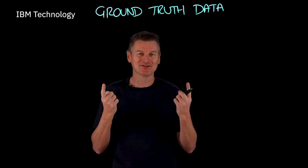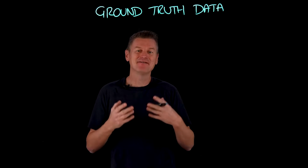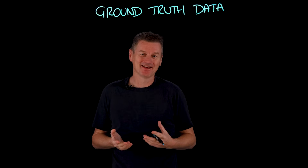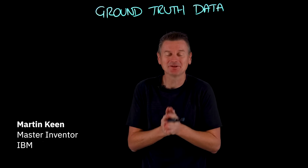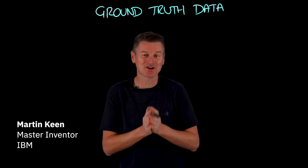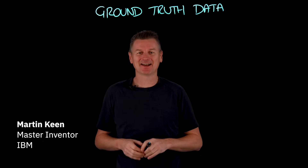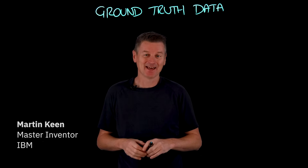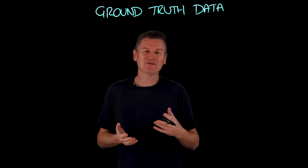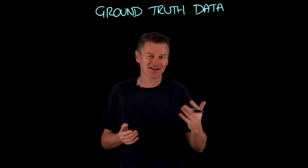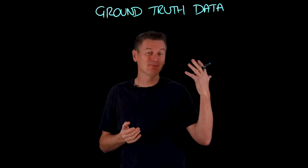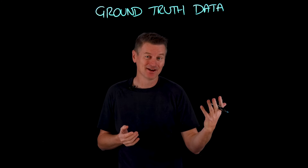Let me tell you the truth about ground truth data. It's the verified, it's the true, it's the incontrovertible data used for training, validating and testing AI models. It's what we use to evaluate AI model performance by comparing the answers that the AI models give us to the correct answer found in the ground truth data.